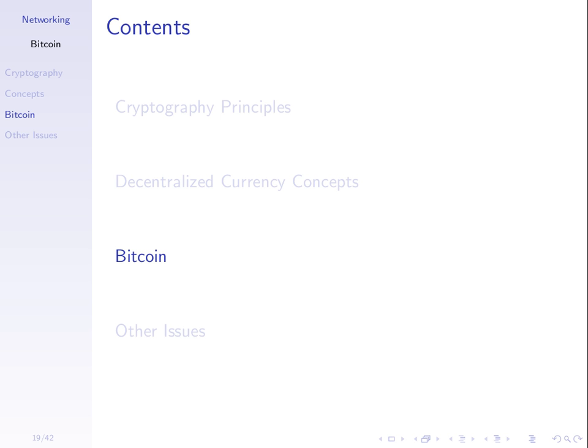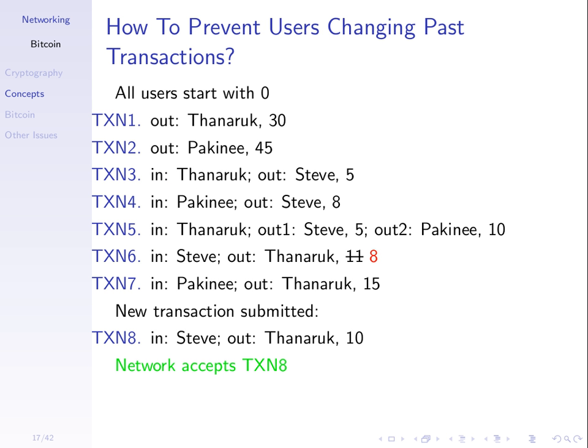So we've talked about transactions. Think of it simply: there's an input account where the money comes from, an amount, and an output account where we send to. We have a log of all transactions — a large file where every transaction is recorded. Everyone has a copy on their computer, connected by a communications network, and when a new transaction is added, everyone's file is updated.